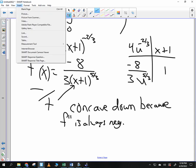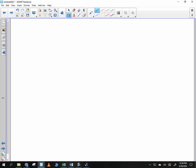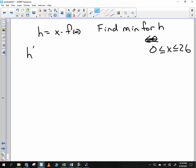Last one. This was the tough one, wasn't it? Yeah. So this one was tough. Let h be equal to x minus f of x. Find minimum for h from 0 to 26. So when does a minimum occur, Mr. Radin? When h prime changes from negative to positive.